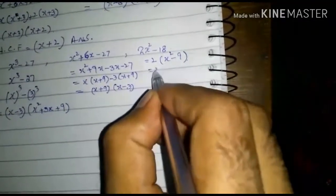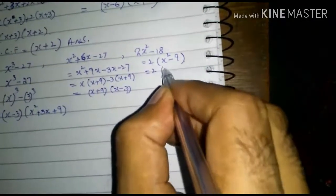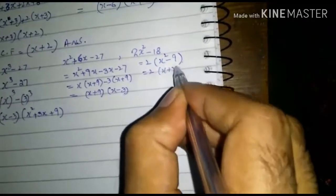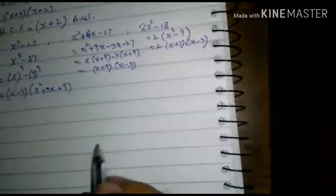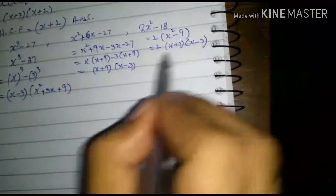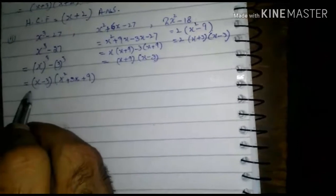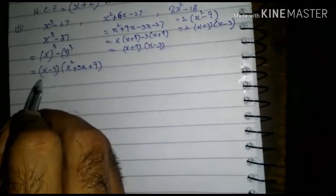And we can factorize it as 2 into x plus 3 into x minus 3. Now we look at x minus 3, x minus 3, x minus 3 in all three given expressions factors.